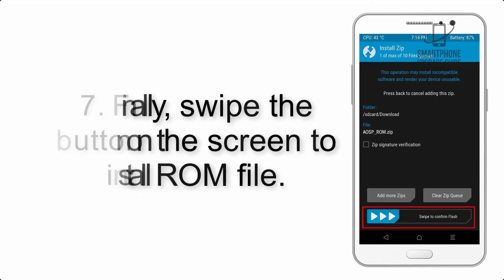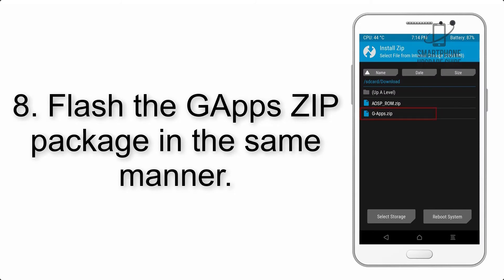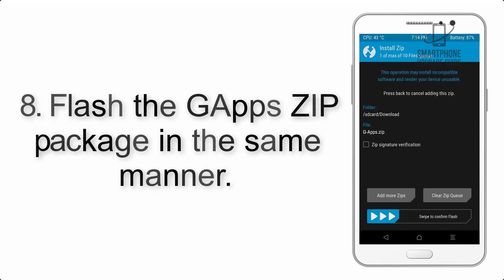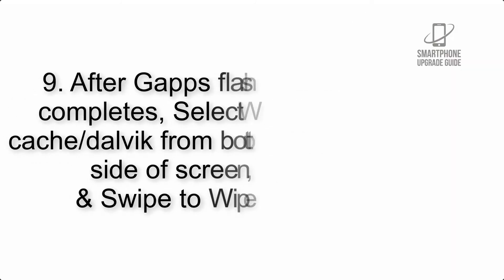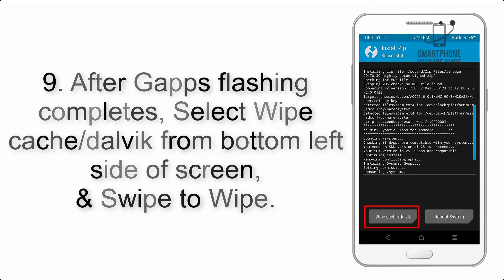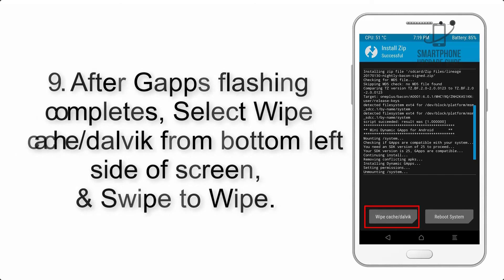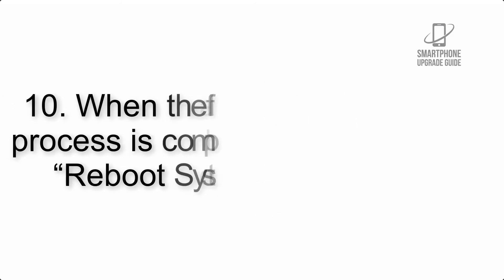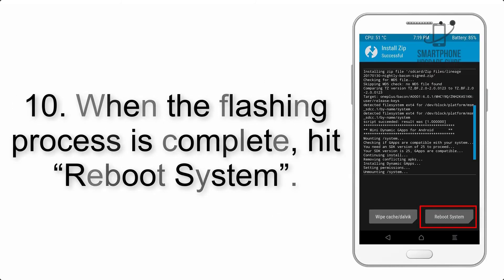Step 8: Flash the GApps zip package in the same manner. Step 9: After GApps flashing completes, select Wipe Cache and Dalvik from the bottom left side of the screen and swipe to wipe. Step 10: When the flashing process is complete,